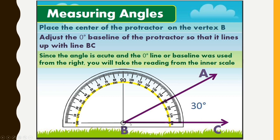Here the ray is going towards the right, so 0 degrees is on the inner scale, and we take the inner scale to measure. Counting 0, 10, 20, 30 degrees — the measure of this angle is 30 degrees.